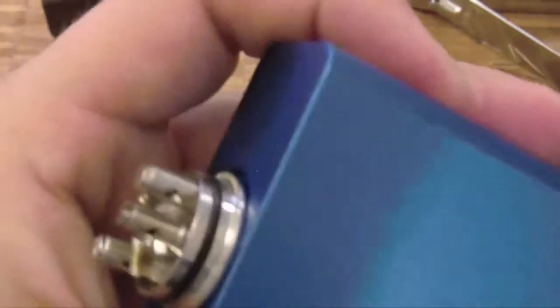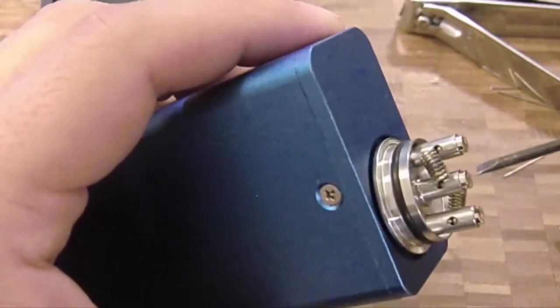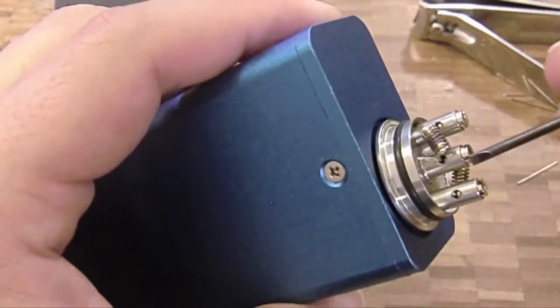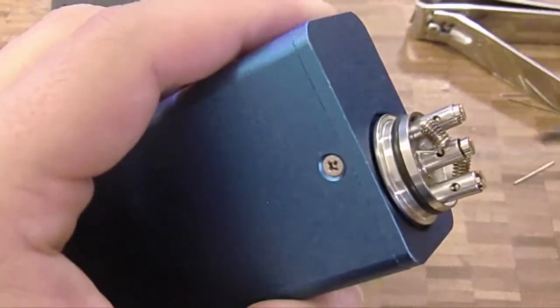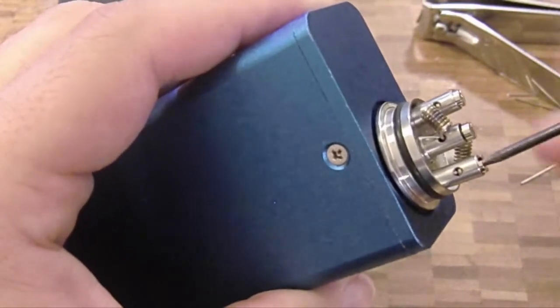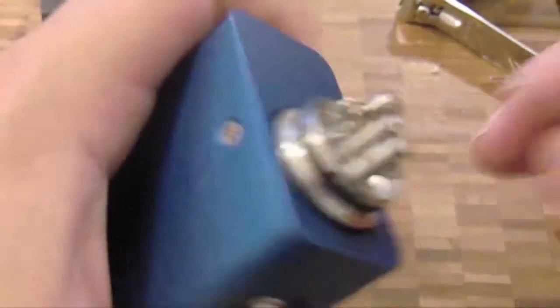So there you go, you're going to get 0.3 ohms if you just set up a dual coil with the wires that they send you. So for this one we're going to just do a single coil setup.